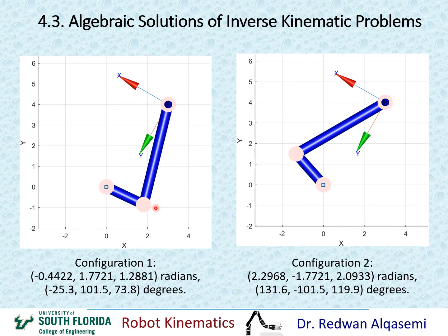One of them is elbow down and one of them is elbow up. This demonstrates how we can have multiple solutions for the exact same end-effector pose — different configurations leading to the same position and orientation.